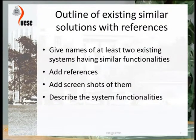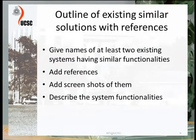The next point in the analysis chapter is the outline of existing similar solutions with references. For that you have to study existing similar solutions. By gathering facts, you have identified some functionalities of the system that you want to design, and with that understanding you can select some systems with similar functionalities. You have to include at least two systems in your report. Give names of at least two systems, discuss their functionalities, and add references so that we can see that you have really referred to them and studied those systems. It is better to have some screenshots as well and describe their functionalities.